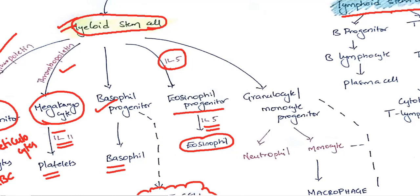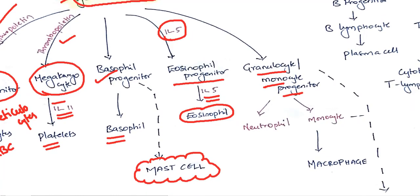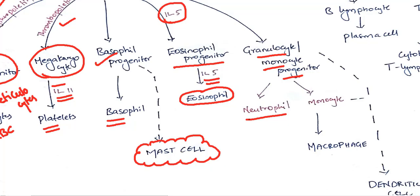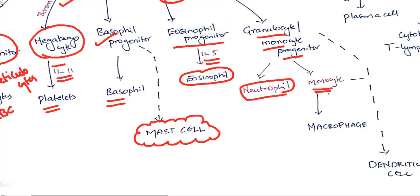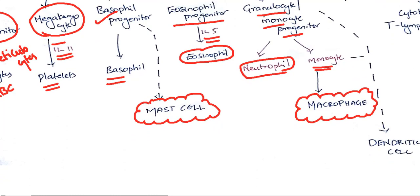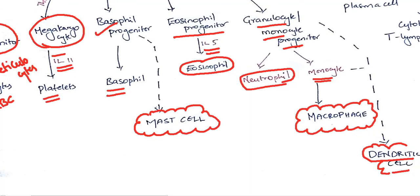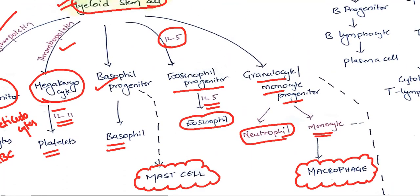Through this myeloid stem cell we also get granulocyte-monocyte progenitor, which in turn divides into neutrophil and monocyte. Monocyte gives rise to macrophages, which also have some immune function. This granulocyte-monocyte progenitor also gives us dendritic cells, which also have some immunity effect. Thus we can conclude the myeloid lineage.